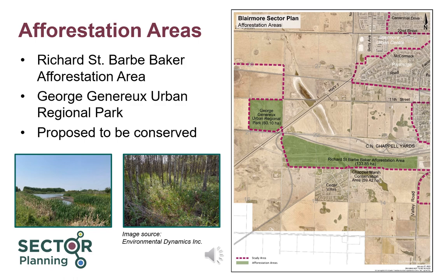There are two afforestation areas in the Blairmoor sector: the Richard St. Barbe Baker Afforestation Area and the George Jenner Urban Regional Park, both in the southwestern corner of the city. The sector plan proposes the conservation of both areas. Only improvements that conserve the natural and cultural heritage resources or enhance the recreational and educational use of the area will be allowed within the afforestation areas. Future guiding plans led by the city, including natural area management plans, will determine the specific usage of the afforestation areas. The city has begun work on a pilot natural area management plan for the Richard St. Barbe Baker Afforestation Area, and a link to the engagement webpage for that project is available on this project's webpage.